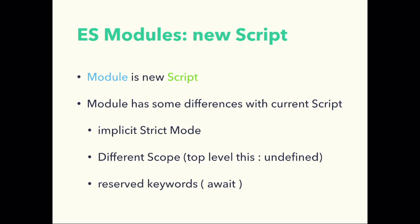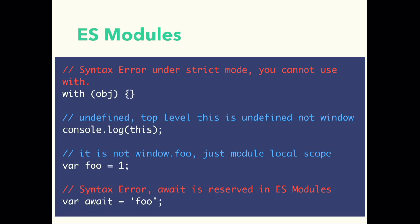ES modules are a new kind of script with some differences from legacy scripts. Three key points: implicit strict mode, different scopes, and already-defined reserved keywords like 'await'. You cannot use the 'with' statement in ES modules because they run under strict mode implicitly. You cannot access top-level 'this' — it is undefined. If you define top-level scope variables, they don't reach the global scope. And 'await' is a new reserved keyword in ES modules — using it as a variable name causes a syntax error.